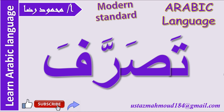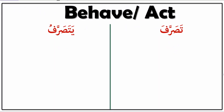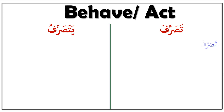Now let's see what the meaning of تصرف is. تصرف means 'behave' or 'to act.' In the past tense: تصرف. In the present tense (مضارع): يتصرف. Please look at the first sentence.